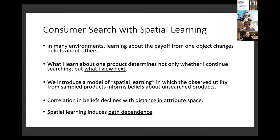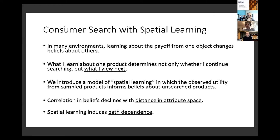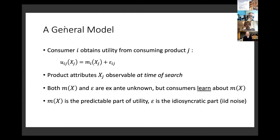When consumers make this kind of inference across products, what I learn about one product determines not only whether I'll continue searching or stop, but also where I go next. We develop a model of what we call 'spatial learning,' in which the observed utility from a sampled product informs beliefs about unsearched products. This correlation in beliefs is a function of the distance between products in attribute space - more similar products are more highly correlated - and this induces path dependence.